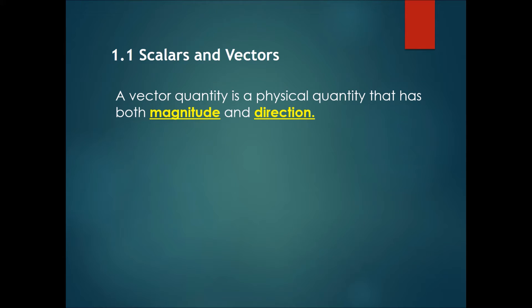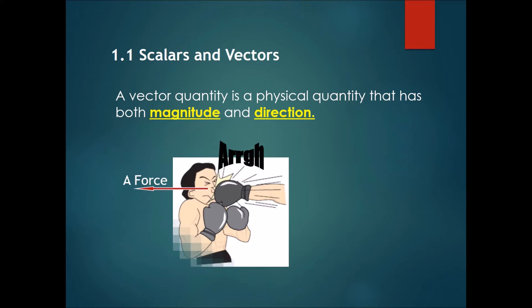In contrast, a vector is a physical quantity that has both magnitude and direction. Some examples are force. Over here you can see a punch into this guy's face, which means there is a magnitude to the force - how much force you put into it - but there's also a direction, which is to the left.